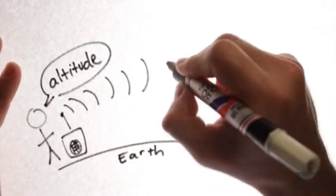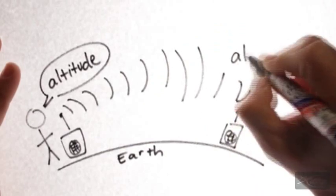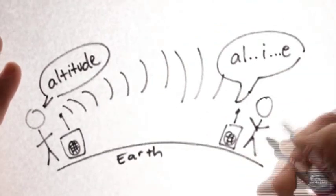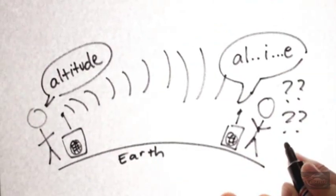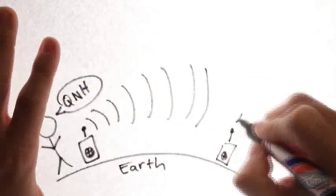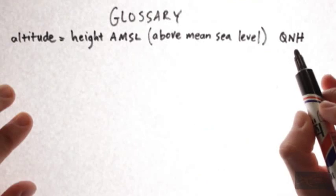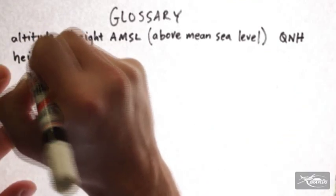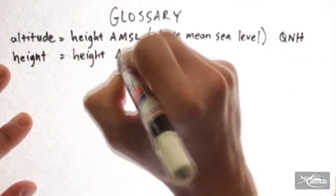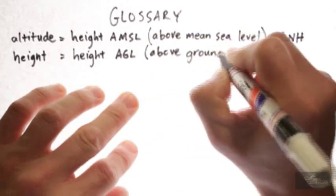The QNH comes from a code called the Q-Code, which was developed approximately 100 years ago in the days of early radio, and it was a way to simplify communications. Our second one is the height above ground level, QFE.